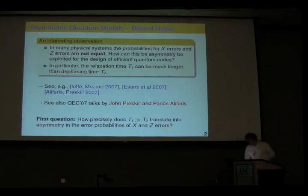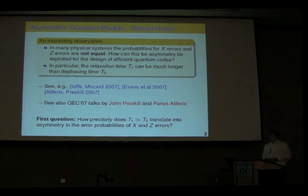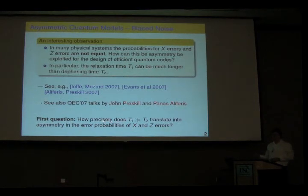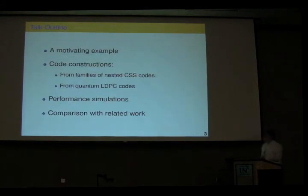The first question is how exactly does the gap between T1 and T2 time translate into an asymmetry of X and Z errors. We are a bunch of computer scientists and we don't know much about actual physical channels. The first thing we realized is it's not as simple as that — T1 exactly corresponds to the probability of an X error and T2 corresponds to the probability of a Z error. A process which causes relaxation actually contributes to both X and Z, so we try to understand what's going on.